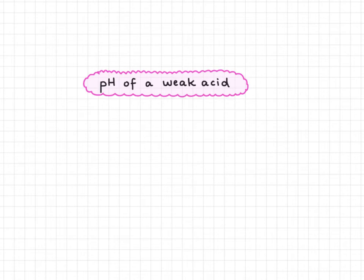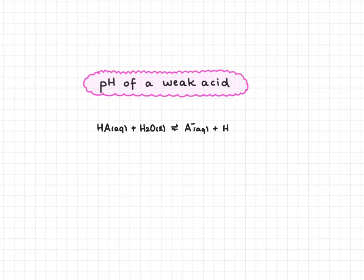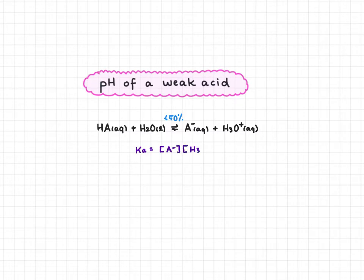In this video we're going to explore how to calculate the pH of a weak acid. As a reminder, a weak acid, which we'll represent as HA, is going to ionize in water to form an equilibrium with its conjugate base and hydronium ions. This will typically be a less than 50% reaction. To solve this we're going to need to use an ICE table and the acid equilibrium expression: conjugate base times hydronium over the acid.